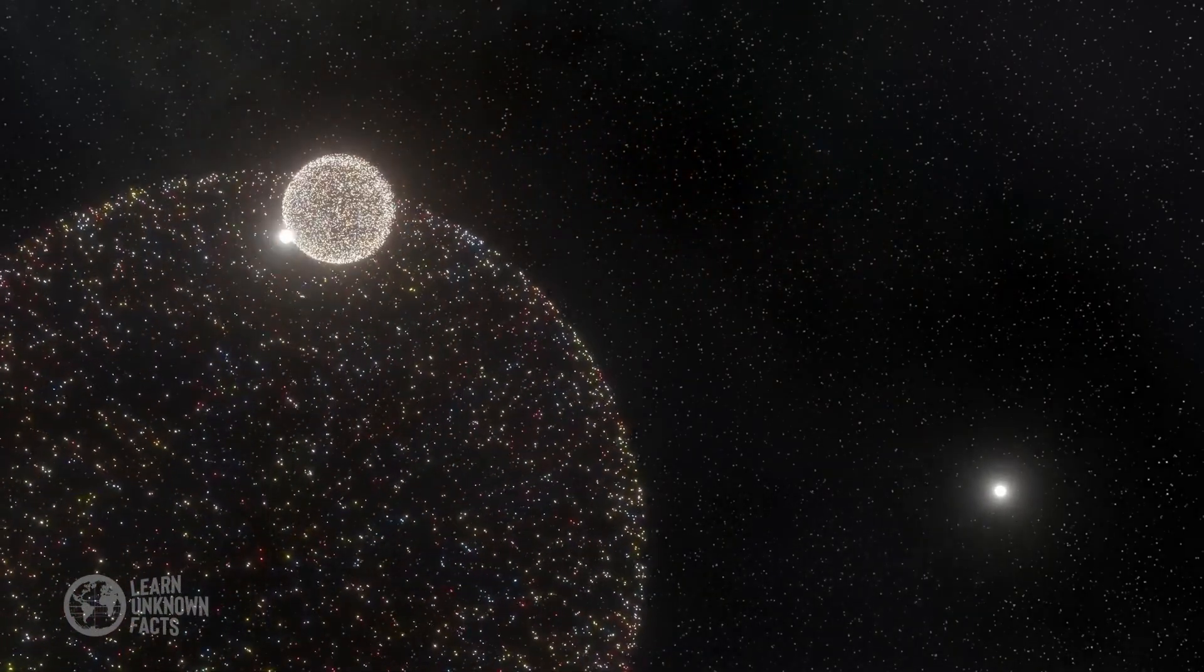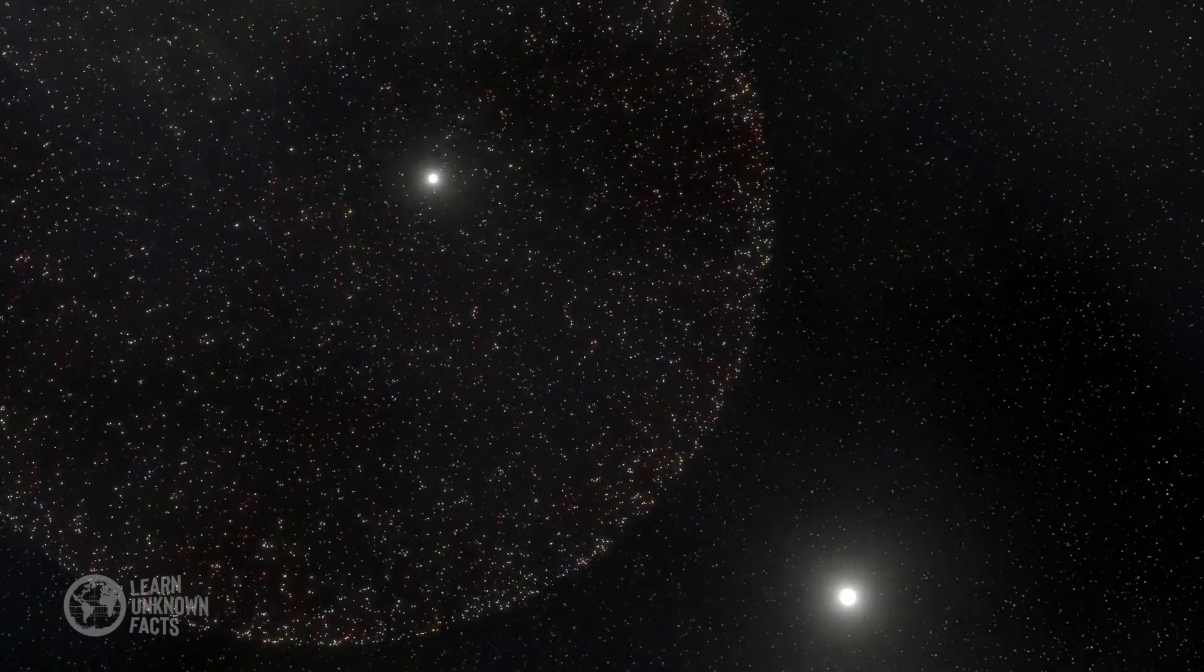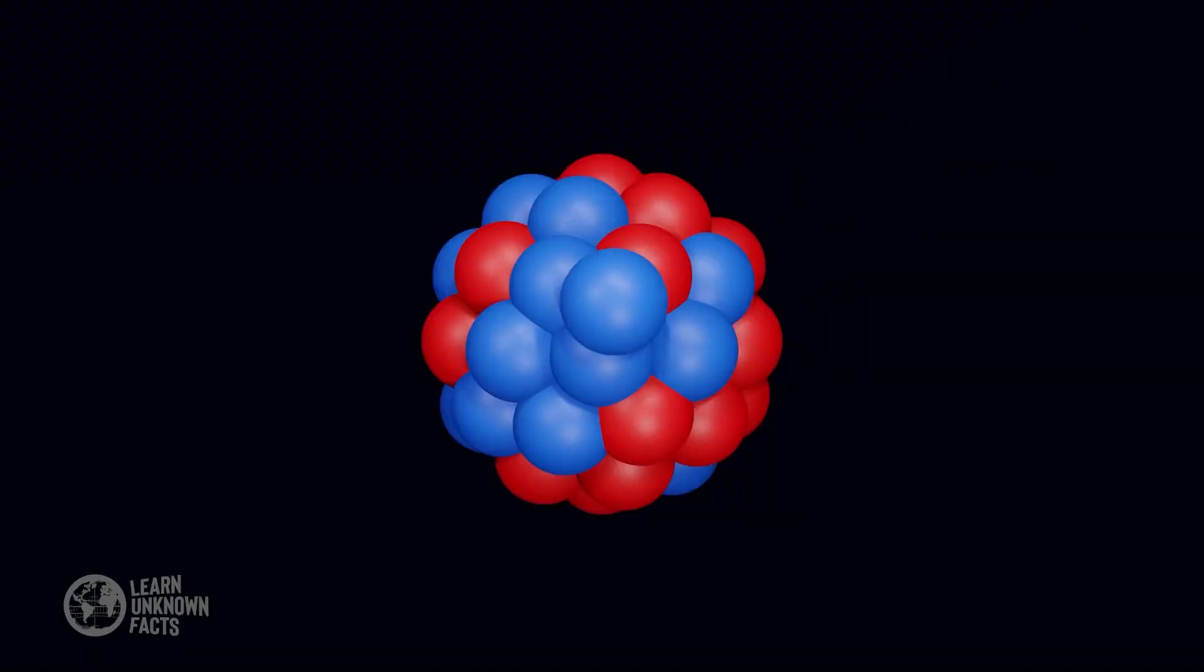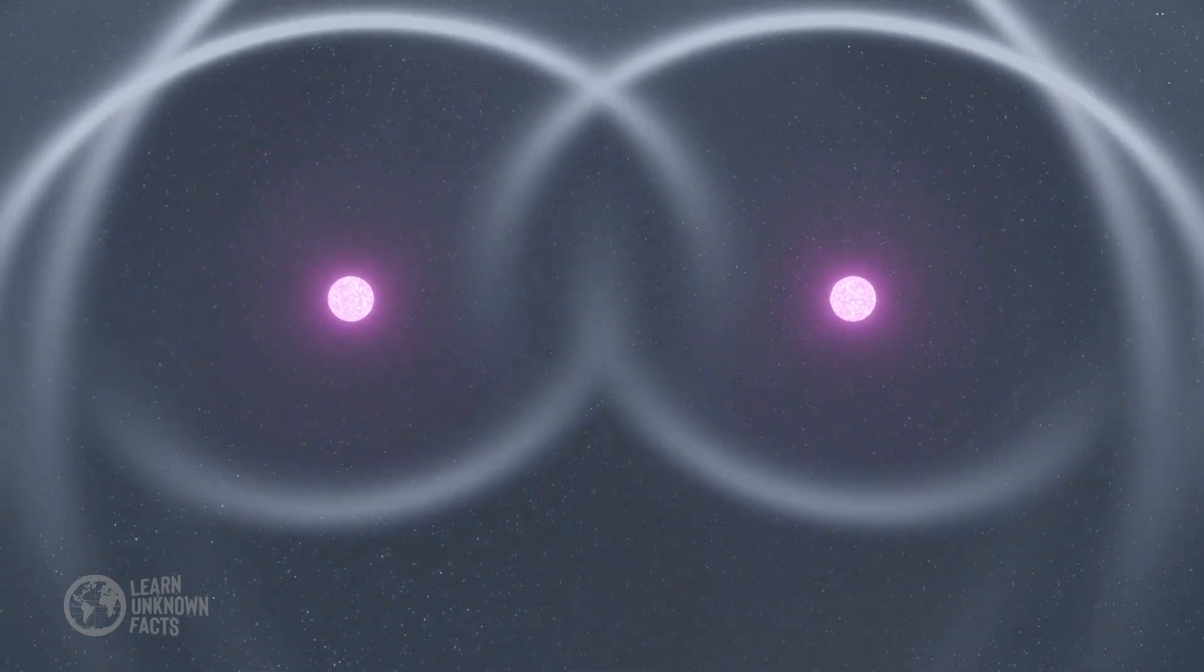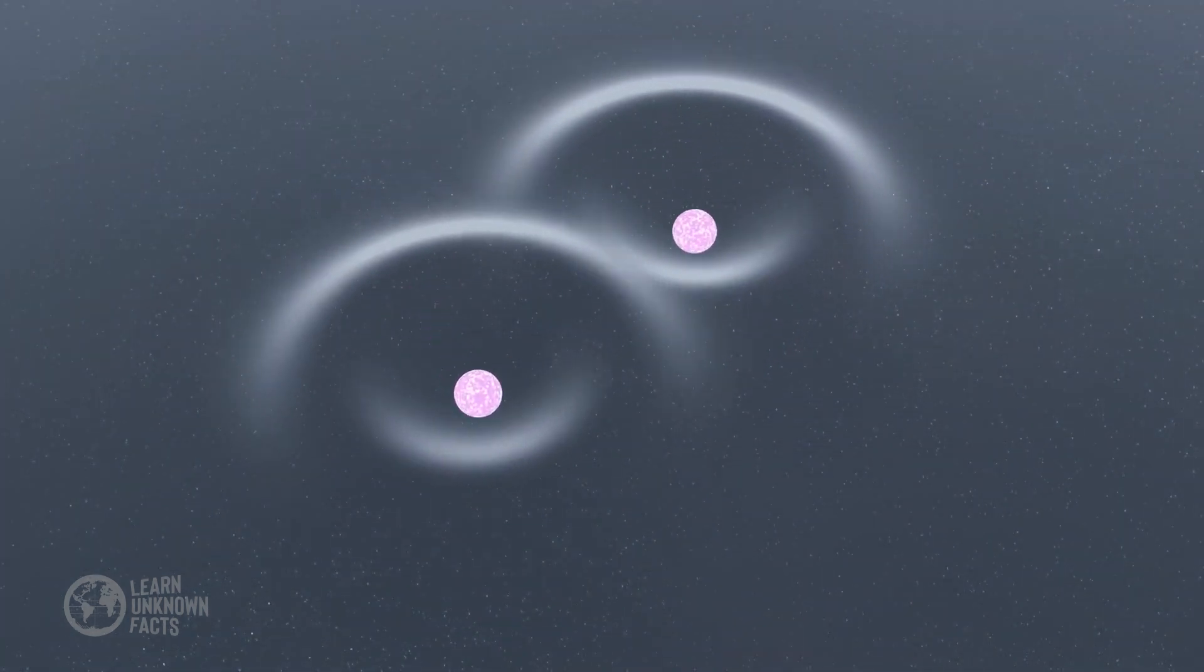This occurs through processes like the R-process, rapid neutron capture, and the S-process, the slow neutron capture. The R-process occurs in the extreme conditions of a supernova, where a large number of neutrons are rapidly captured by atomic nuclei, leading to the formation of heavy, unstable isotopes that eventually decay into stable elements.